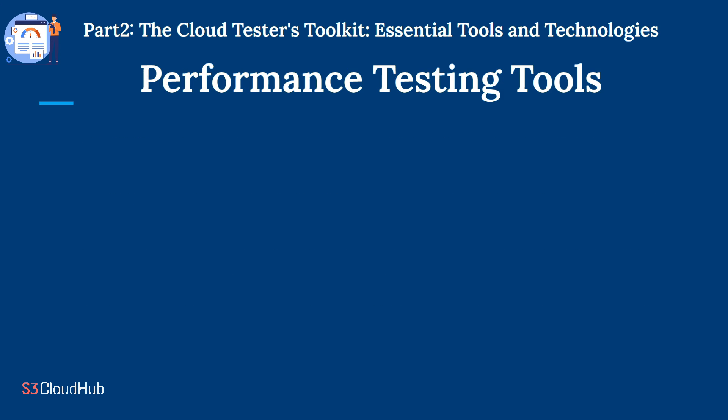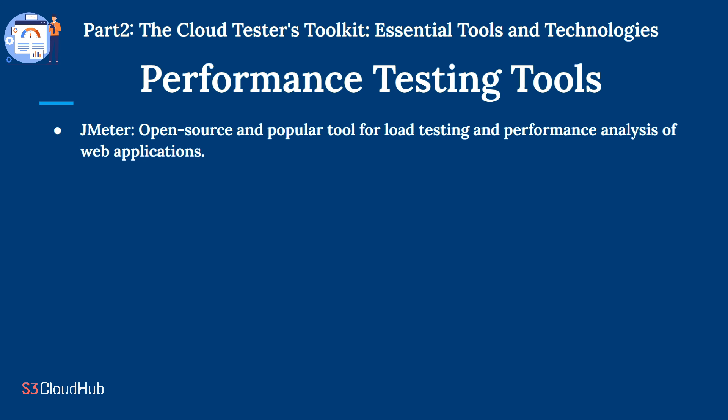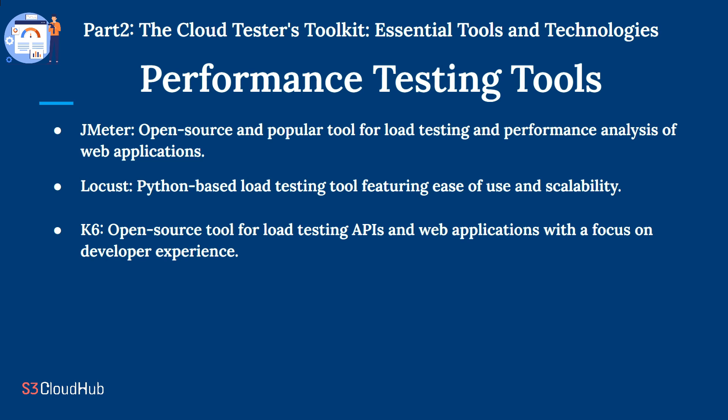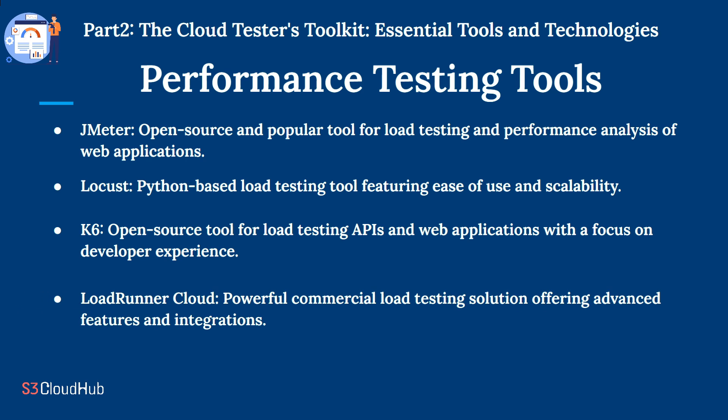Performance testing tools: JMeter is an open-source and popular tool for load testing and performance analysis of web applications. Locust is a Python-based load testing tool featuring ease of use and scalability. k6 is an open-source tool for load testing APIs and web applications with a focus on developer experience. LoadRunner Cloud is a powerful commercial load testing solution offering advanced features and integrations.